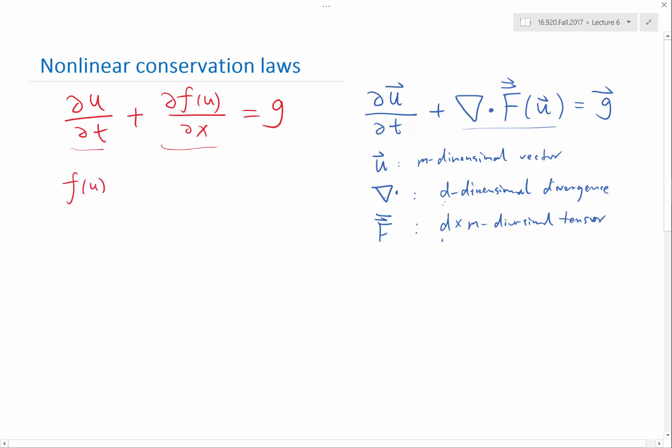What if f of u is equal to a constant big U times a small u? So what equation is this?